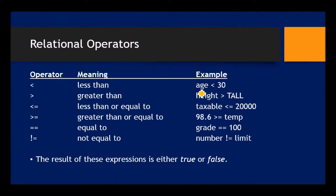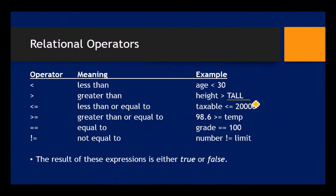You can compare any two items. For example, this might be a variable and we're comparing the variable to a literal value. Is age less than 30? There's the comparison. Is height greater than some constant? Remember we talked about constants — a constant we've previously declared somewhere.